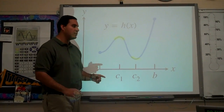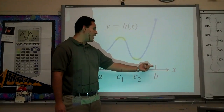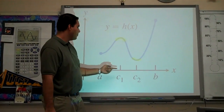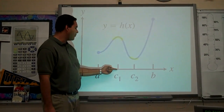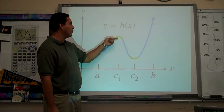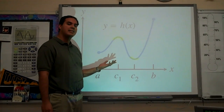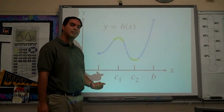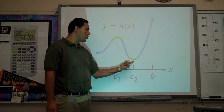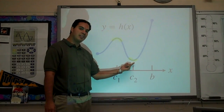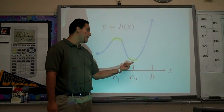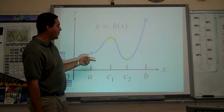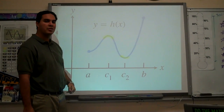We have an absolute max at B and a relative max at C1. C1 is not the absolute max but it is a relative max. C2, though, is a relative minimum but it also is the absolute minimum of the entire function.